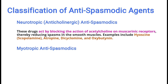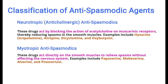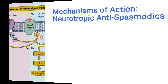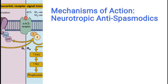The second category is myotropic antispasmodics. These drugs act by directly acting on the smooth muscles, so that spasms can be relieved without affecting the nervous system. Examples include papaverine, mebeverine, alverine, and pinaverium.